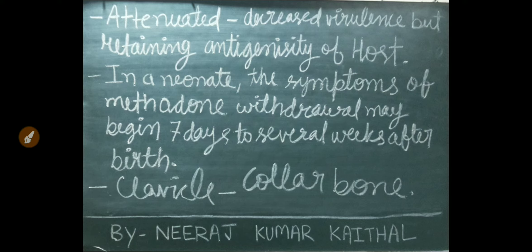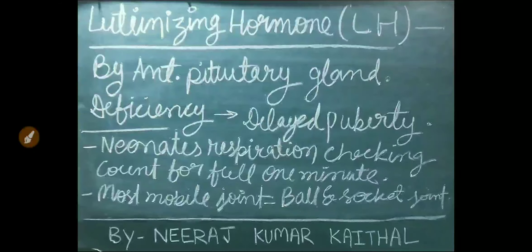Clavicle is also known as collar bone. Luteinizing hormone is secreted by the anterior pituitary gland. Its deficiency can cause delayed puberty.